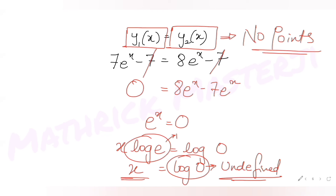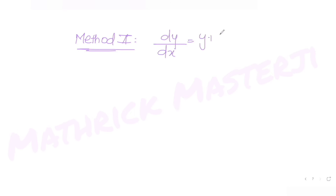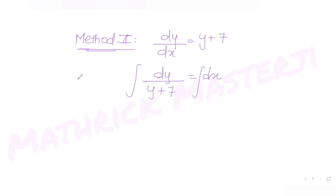There is another method to solve this question. We have dy/dx = y + 7. Using separation of variables, we keep y on the left and x on the right, then integrate both sides.